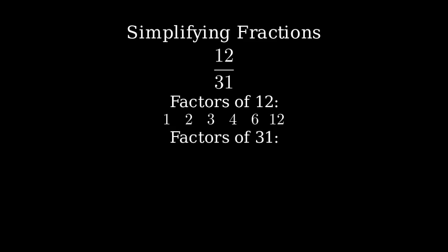Now let's find the factors of 31. 31 is actually a prime number, which means its only factors are 1 and itself.